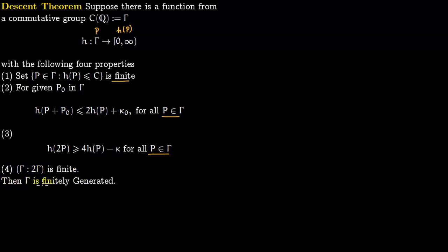Fourth, the index of 2γ in γ is finite. From these four conditions we are going to prove that γ is finitely generated — that is, all rational points on this non-singular cubic curve, which form a group, are finitely generated.